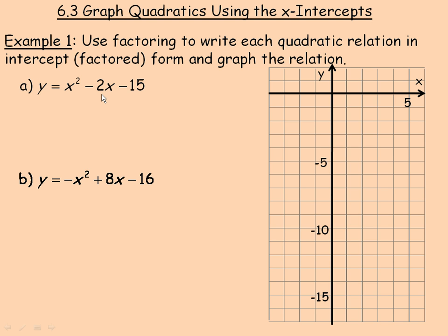So we need to factor x squared minus 2x minus 15. We need to find two integers that add to negative 2 and that multiply to negative 15. Those integers would be 3 and negative 5. 3 and negative 5 add to negative 2 and multiply to negative 15.